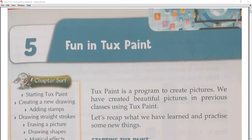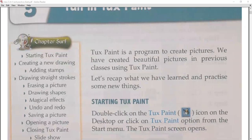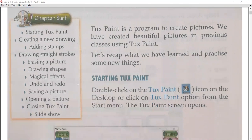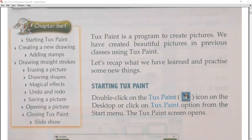The key terms of this chapter include: starting Tuxpaint, creating a new drawing, adding stamps, drawing strokes, drawing along, and closing. We can create and change these concepts, and we have created beautiful pictures in previous classes using Tuxpaint.